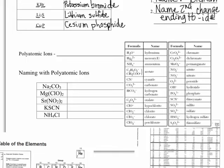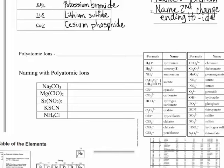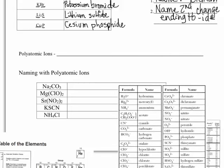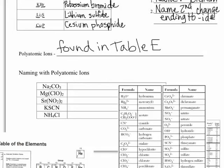If you have a polyatomic ion in a compound, you can look it up in table E and it'll tell you what it should be called. When you look at the formula, if you see that there's more than simply two different elements — in this case there's three — then you know you must have a polyatomic ion. My rhyme is: if I see three, look at table E. So if you see three or more capital letters, because each capital letter is a new element, it must contain a polyatomic ion. Polyatomic ions are found in table E, and you're going to use that whenever you have three or more elements in your compound.